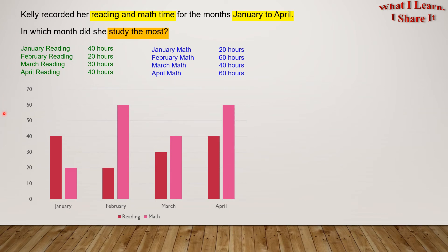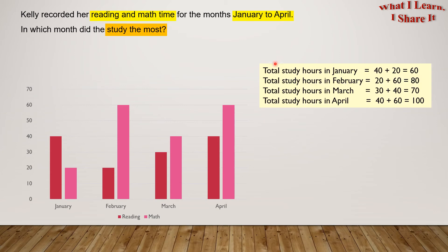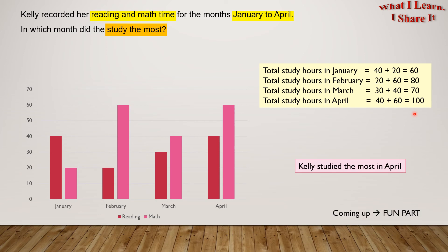Let's add the reading and math time for each month to find out which month she studied the most. Total study hours in January: 40 plus 20 equals 60. Total study hours in March: 30 plus 40 equals 70. Total study hours in April: 40 plus 60 equals 100. So Kelly studied the most in April.